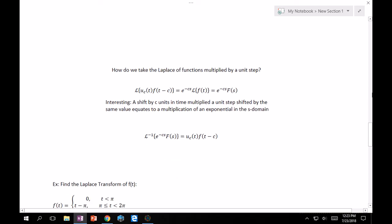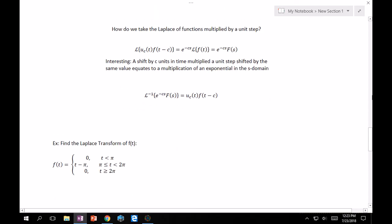So, how are we going to start taking Laplace of something attached with a unit step function? And it goes like this. You basically have uc of t inside. But you also have to have f of t minus c. So, what this means is a shift by c units in time in your function f of t multiplied by a unit step that's shifted by the same value. So, by the same unit c equates to a multiplication of an exponential in the s domain. Which means that, at that point, all you have to really do is take the Laplace of the f of t unshifted. And just tack on e to the minus c s. And again, because of the 1 to 1 correspondence, you can do the same thing for the inverse.